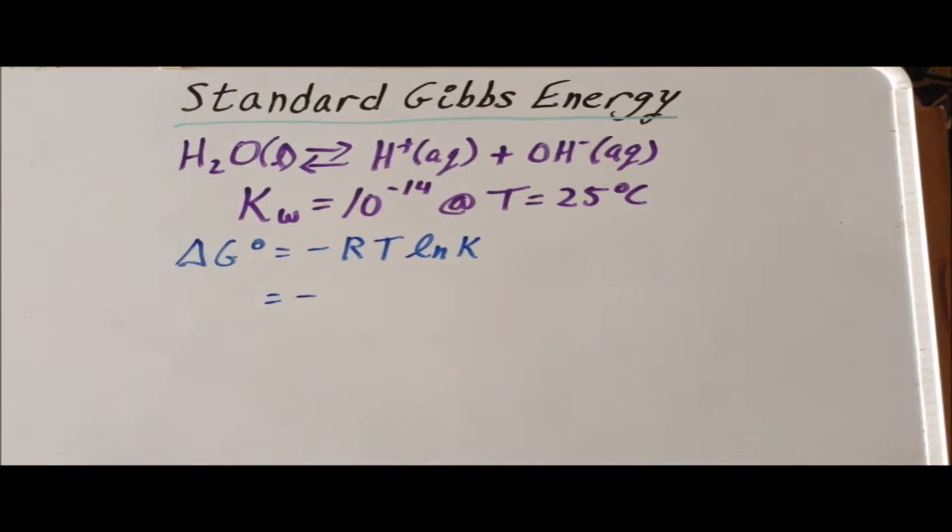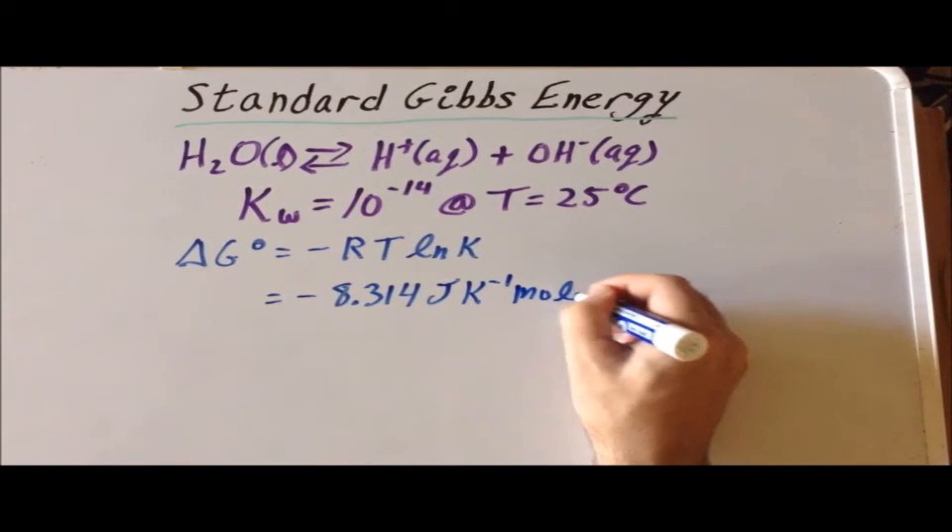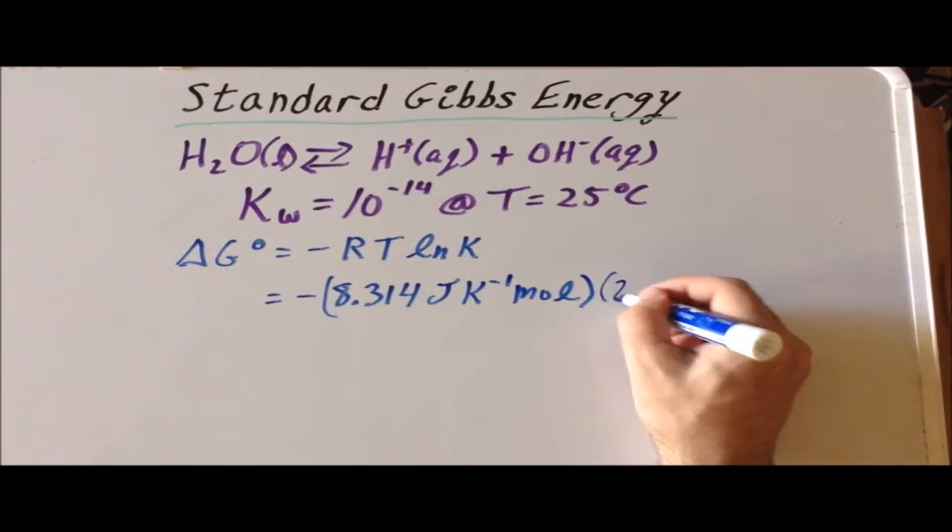Now, we can calculate the delta G naught for this reaction, since we know that delta G naught equals minus R times T times the natural log of K. R is the gas constant, with a value of 8.314 joules per Kelvin mole. Our temperature is 25 degrees centigrade, which is 298.15 Kelvin.